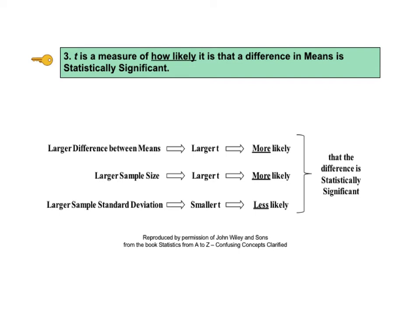Some authors say that t is a measure of how good the sample is or how accurate the sample is in estimating the population or process mean. But it's probably more precise to say that t is a measure of how likely it is that a difference in means is statistically significant.